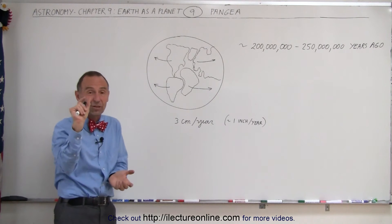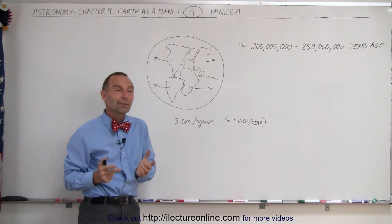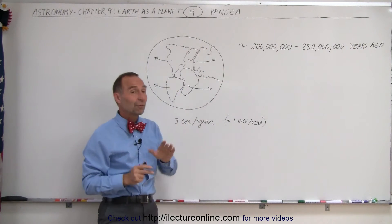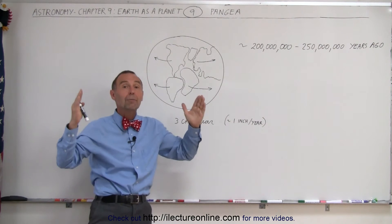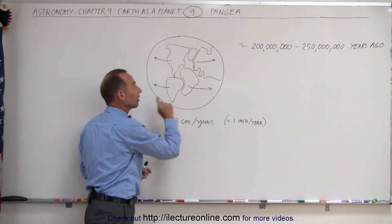You may say three centimeters per year, that's about one inch per year, that's almost nothing. But actually, that's a lot. And in a period of about 200 or 250 million years, those continents have drifted apart from one another so that now between them we have the Atlantic Ocean, where before they're actually touching.